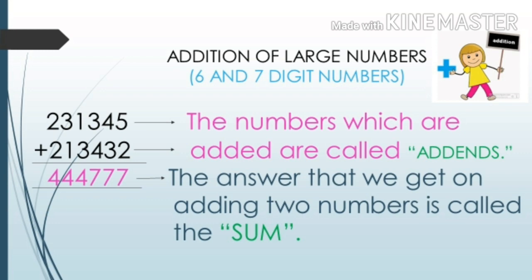Iska matlab yeh hua ki 231345 aur 213432 addends hain. Matlab jin numbers ko hum jodte hain wo addends kehlate hain. Unko jodne pe jo answer aata hai, use hum sum kehte hain.